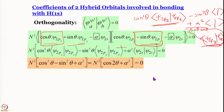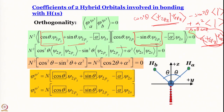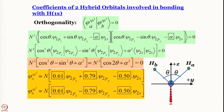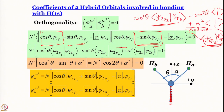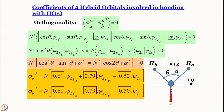Setting cos2θ + α² = 0 gives α² = −cos2θ. Substituting 2θ = 104.5° gives α = 0.5 (taking the positive root, since the minus sign was already written). With θ = 52.25°, cos(52.25°) = 0.61 and sin(52.25°) = 0.79.